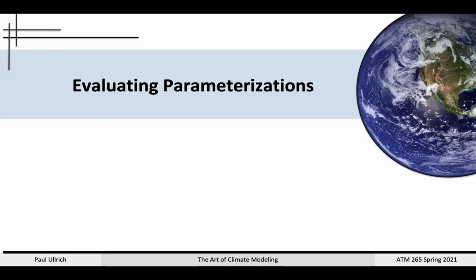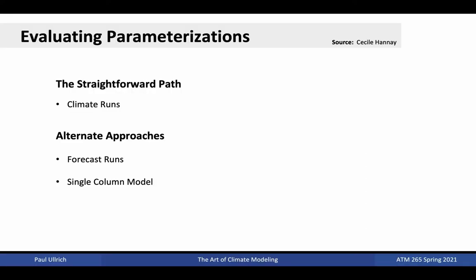That wraps up our discussion on specific parametrizations found in CAM. Hopefully you have a good feel for the kind of mechanics that goes on under the hood of each of these schemes. Let's now turn our attention to understanding how parametrizations may be evaluated to determine if they are representative of real-world processes. In general, three types of simulations are used to evaluate parametrizations and ensure their behavior is consistent with our physical understanding of the process. The most straightforward route for parametrization evaluation is through full climate runs. However, alternate strategies include forecast runs and single-column model runs.